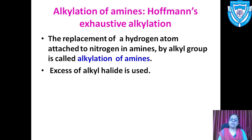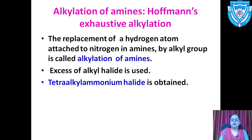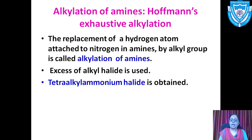Since excess alkyl halide is used and exhausted, it is called exhaustive alkylation. The last product obtained is a tetraalkyl ammonium halide. Starting from a primary amine, I get a secondary amine; from secondary I get a tertiary amine; and from tertiary I get a tetraalkyl ammonium halide.